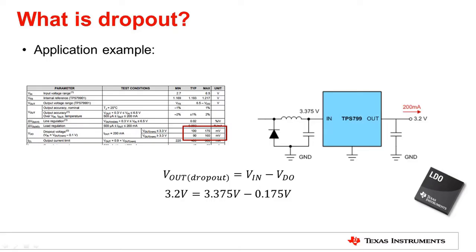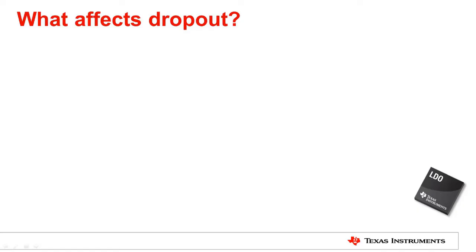If we wish to ensure proper regulation here, we must at least use 3.475 volts. As you can see, dropout is one of, if not the most important parameter for an LDO. So let's take a look at what determines a dropout for an LDO.